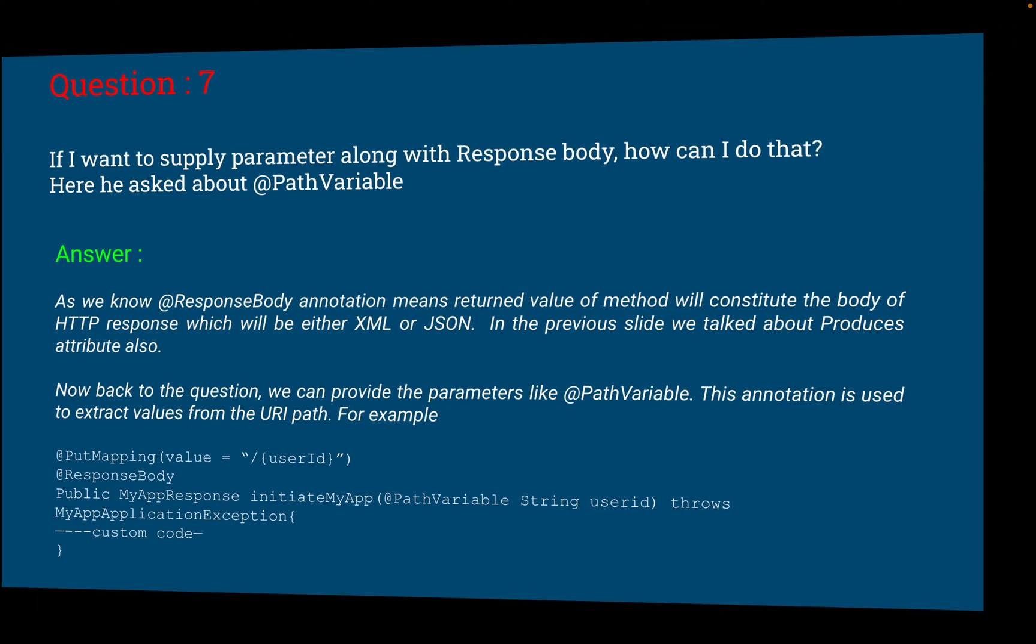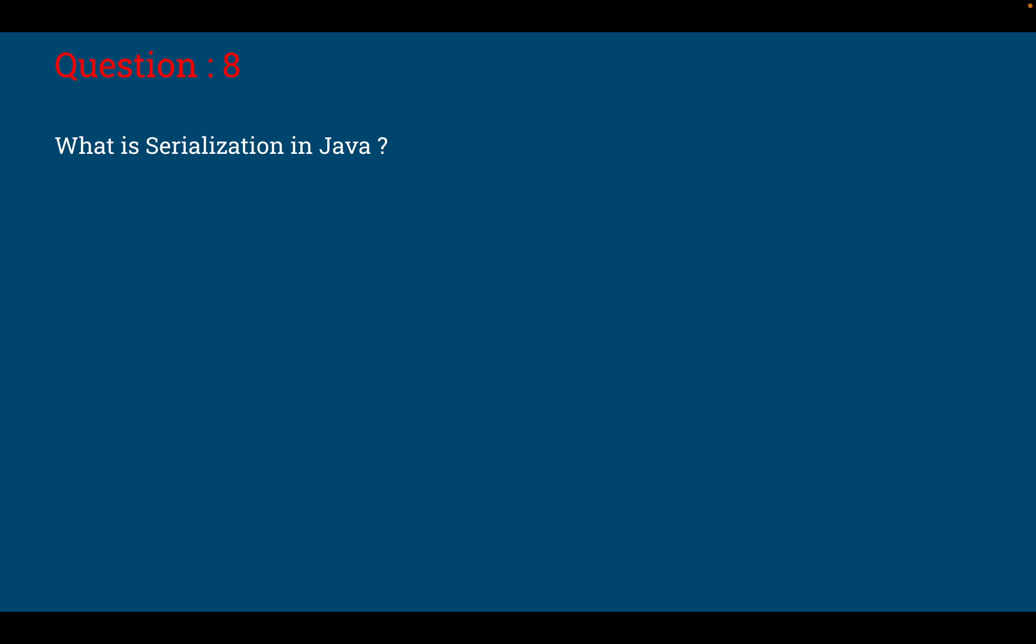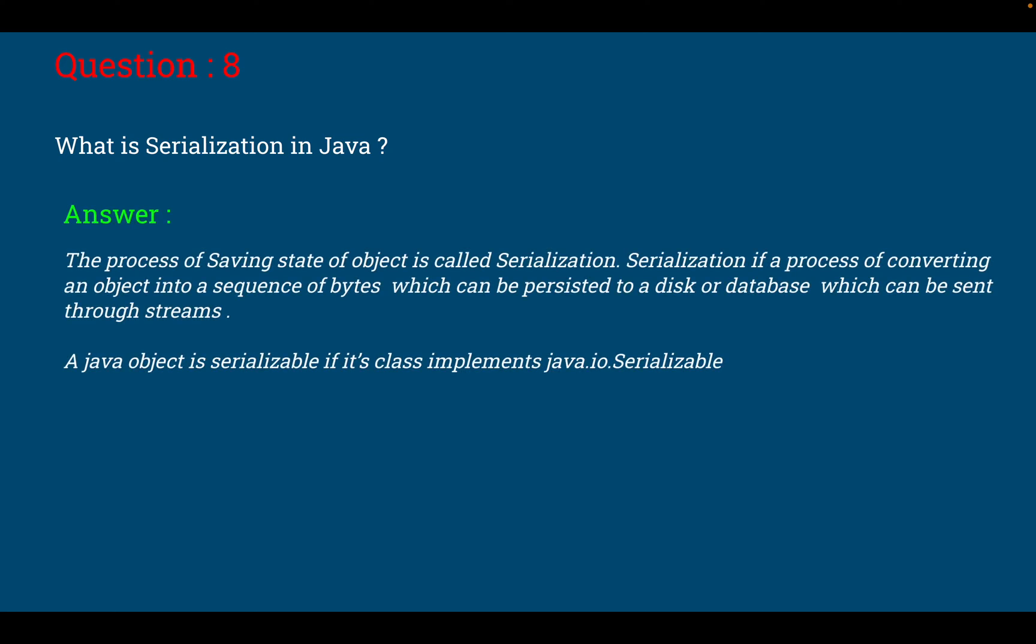Now moving to the next question, interviewer asked me: what is serialization in Java? This is a very basic concept and he wanted to make sure that I know about serialization. The answer is: the process of saving state of an object is called serialization in Java. Serialization is a process of converting an object into a sequence of bytes which can be persisted to a disk or database or sent through streams. A Java object is serializable if its class implements java.io.serializable.